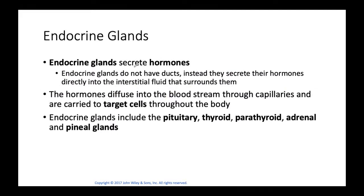Endocrine glands release hormones. Unlike exocrine glands, they don't have ducts — instead, they secrete their hormones directly into the interstitial fluid. Hormones then diffuse into the bloodstream through capillaries and are carried to their target cells throughout the body.